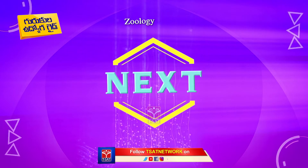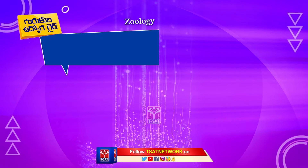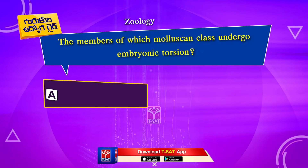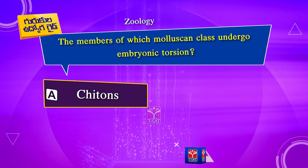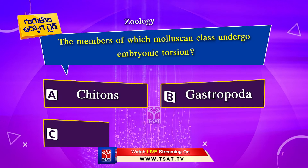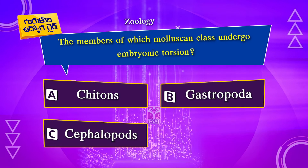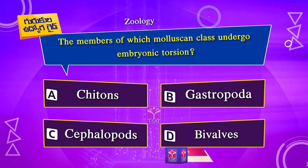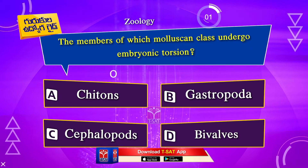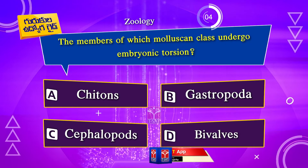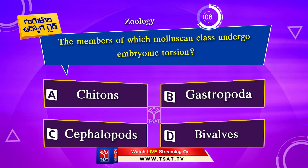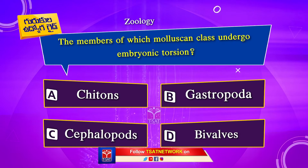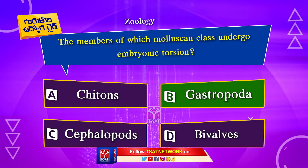Next question. The members of which molluscan class undergo embryonic torsion? Option A. Chitons. Option B. Gastropoda. Option C. Cephalopods. Option D. Bivalves. The correct answer is Option B. Gastropoda.